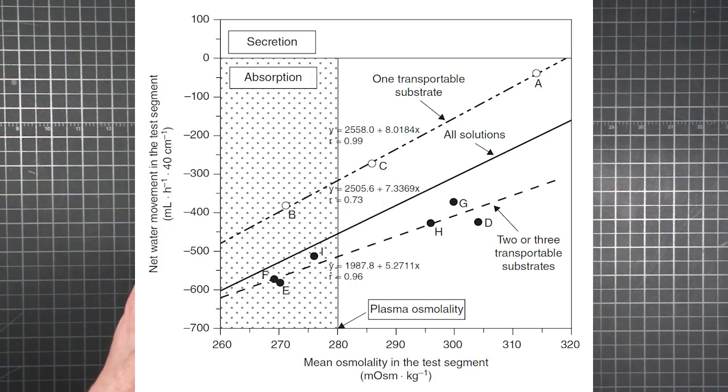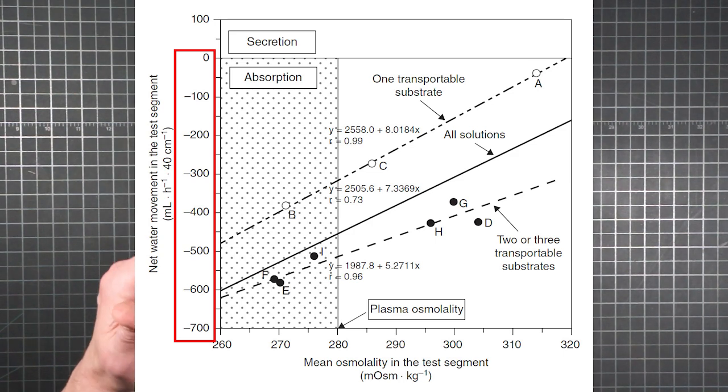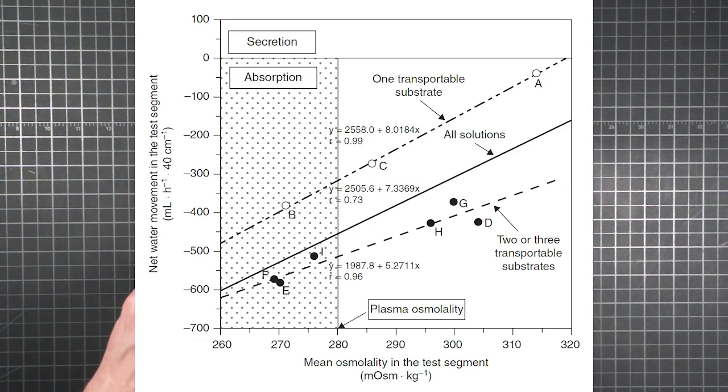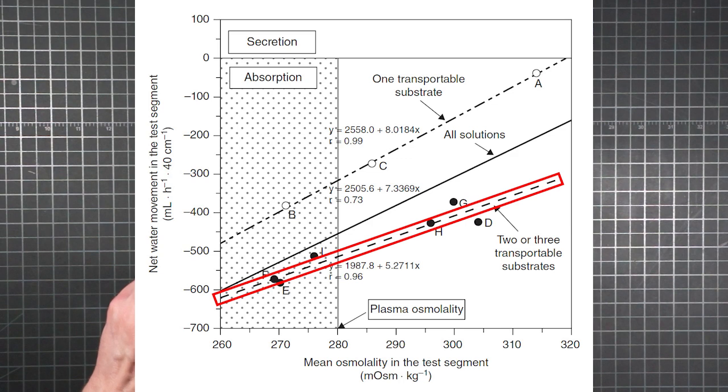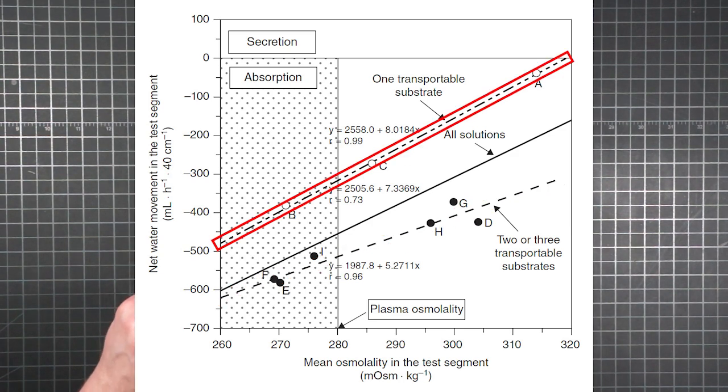They have a graph that illustrates the effect. Absorption is shown as negative secretion, so more, which is better, is the further down you go. You can see that drinks with multiple transportable substrates result in greater rates of absorption compared to those with only one kind of sugar.